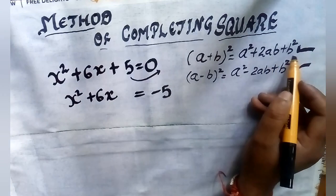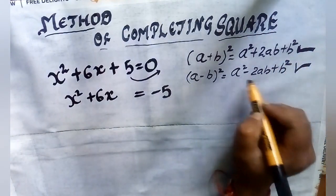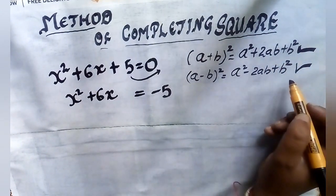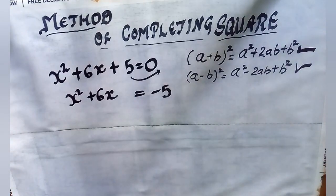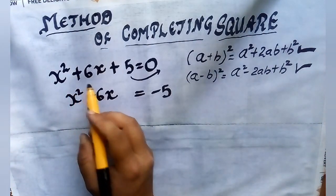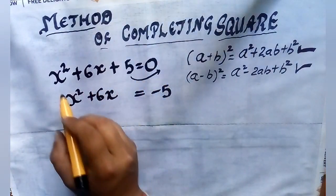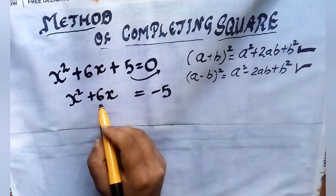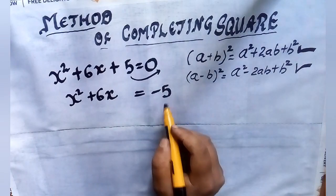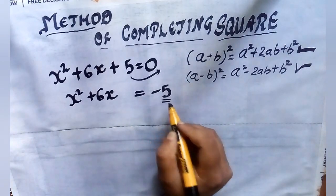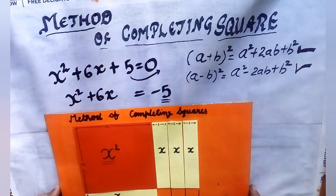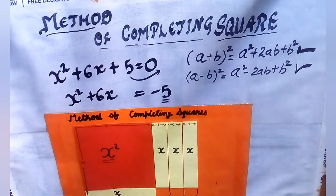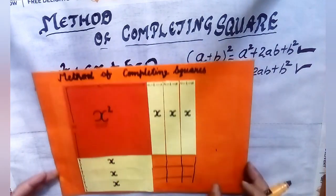Now we need to convert our left hand side of the equation into the form of (a + b)², which is a² + 2ab + b², or (a - b)², which is a² - 2ab + b². Our equation was not a perfect square, that is why we took -5 to the right side. Now check the first term, x², and for that I first took a square whose side equals x.